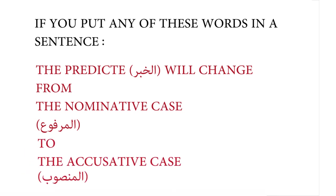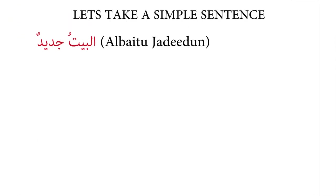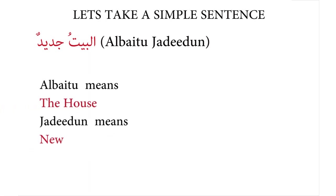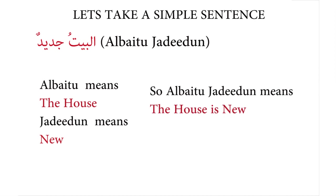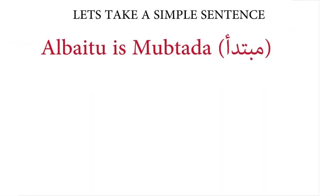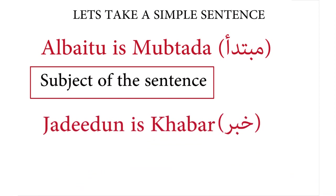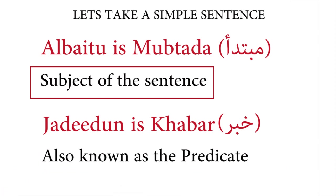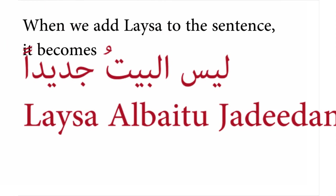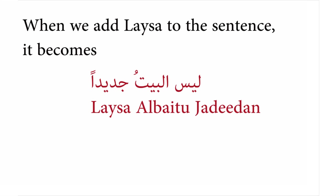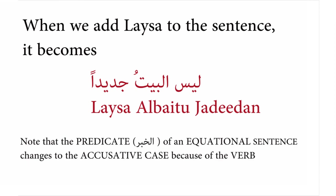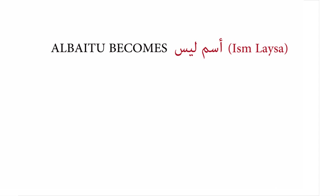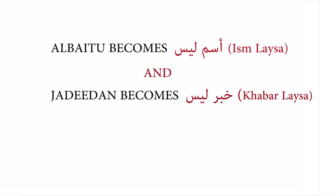Let's look at an example. Take the simple sentence: al-betu jadidun — al-betu means 'the house,' jadidun means 'new,' so 'the house is new.' Al-betu is muptada, or the subject, and jadidun is khabar, or the predicate. When we add leysa to the sentence, it becomes leysa al-betu jadidun. Note that the predicate, al-khabar, changes to the accusative case. Al-betu becomes isam leysa, and jadidun becomes khabar leysa.